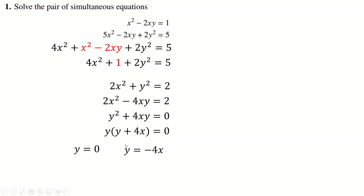Either this factor is zero, which means y equals minus 4x since y plus 4x equals zero. If y is zero, you go back to whichever equation you want — this one is probably the easiest. Then x squared equals one, so x is plus or minus one. Those give two solutions: (1, 0) or (−1, 0) as x, y pairs. Or if y equals minus 4x, you put this back into the simplified equation, replacing y with minus 4x.